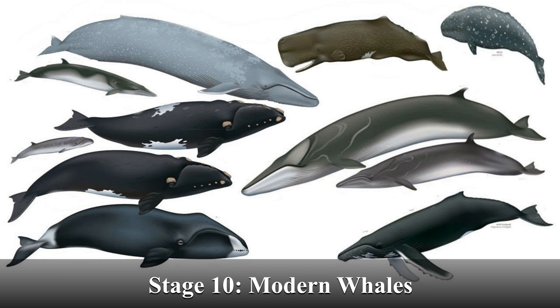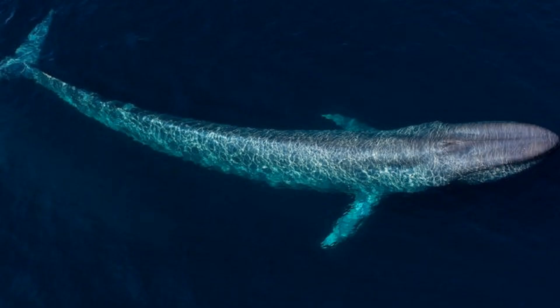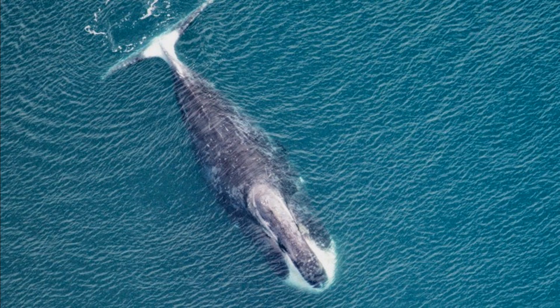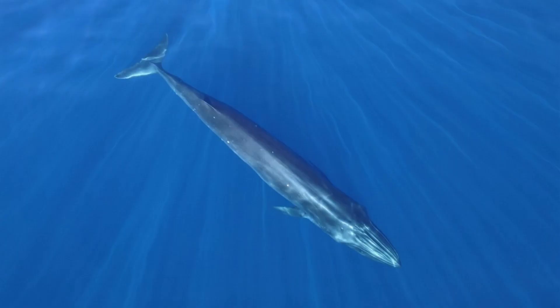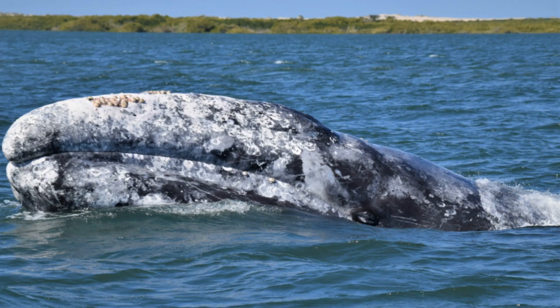Stage 10: Modern Whales. Today, there are approximately 90 species of whales divided into two major groups: the toothed whales (Odontocetes) and the baleen whales (Mysticetes). Toothed whales, like dolphins and killer whales, use echolocation for hunting, while baleen whales filter feed by taking in large volumes of water and expelling it through their baleen plates to trap food.